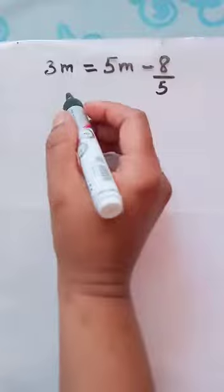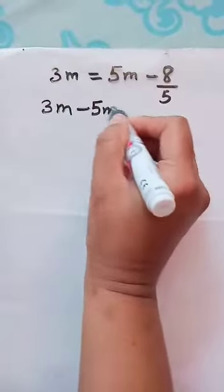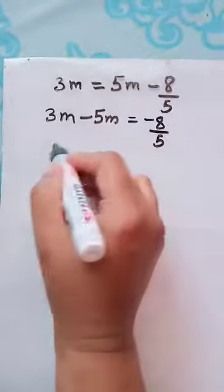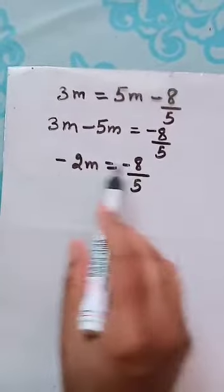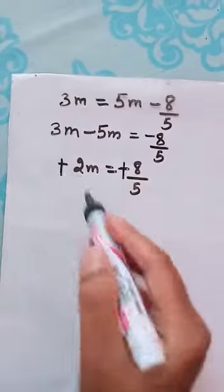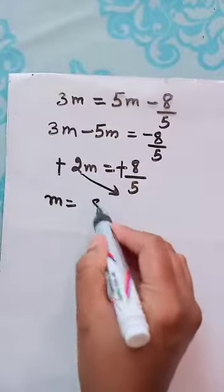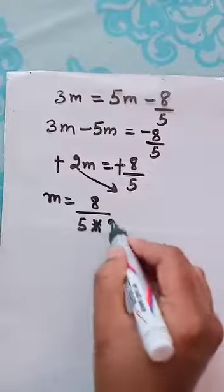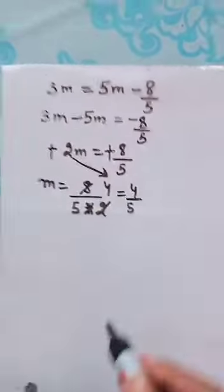Now the next question is 3m is equal to 5m minus 8 by 5. So again the same thing, 3m minus 5m. Because there it was plus, when it comes to left it becomes minus, is equal to minus 8 by 5. So it is minus 2m is equal to minus 8 by 5. Now you can cancel this negative symbol because it is common for both of them. So I can cancel this. So m will be equal to, this 2 has to come down, 8 by 5 into 2. So 2 fours are, so the answer is 4 by 5.